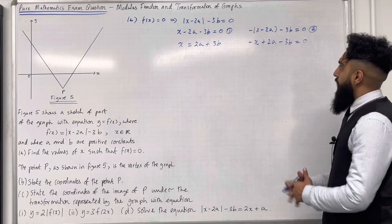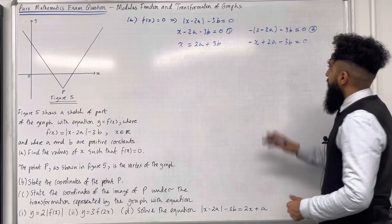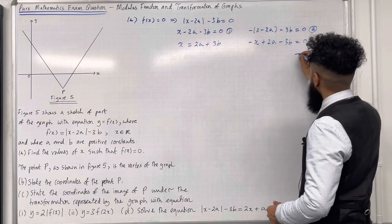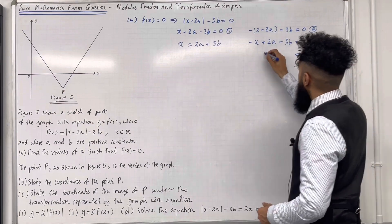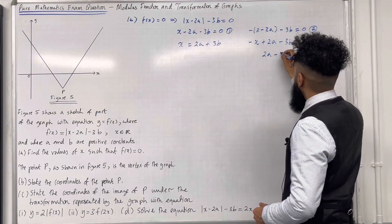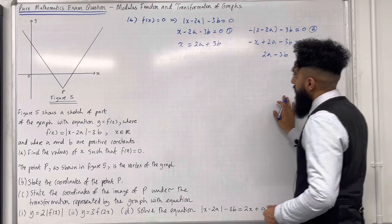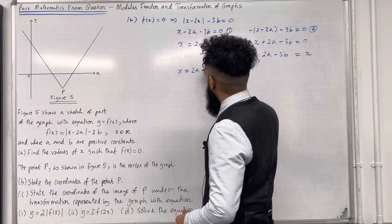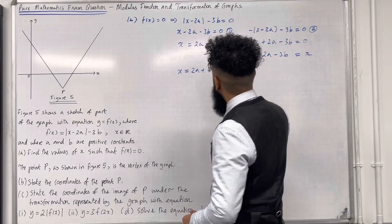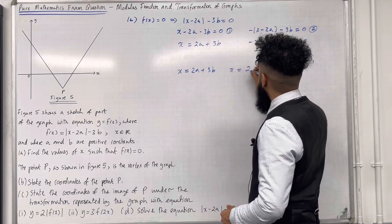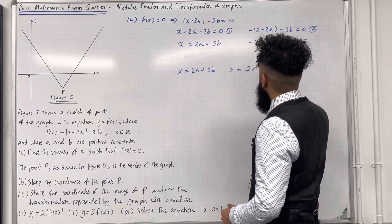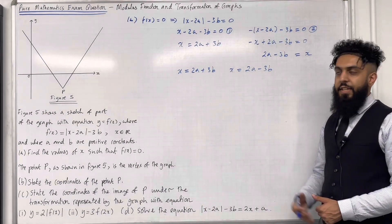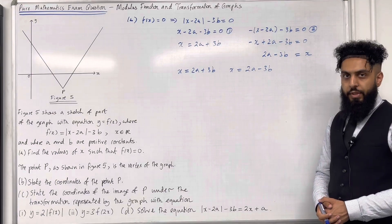Solving equation 1: x = 2a + 3b. For equation 2, we expand the bracket: −x + 2a − 3b = 0, so x = 2a − 3b. Therefore x = 2a + 3b and x = 2a − 3b, and that completes part A of the exam question.